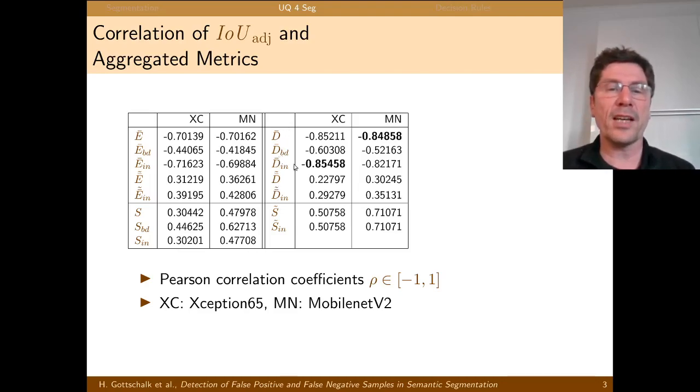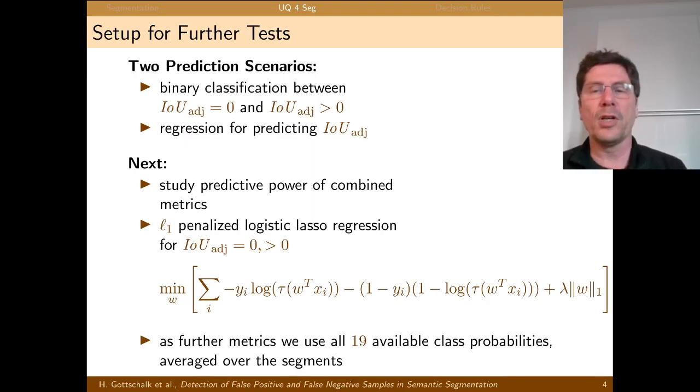But for calculating these guys here you only need the network's prediction. So these are coming up with pretty high correlations and that gives us hope that we can combine all these metrics into a yet more powerful predictor. That's what you see here.